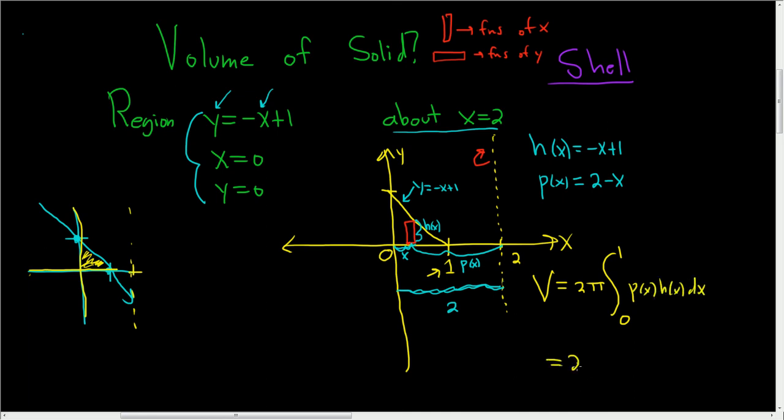So this is 2 pi 0 to 1. And then p of x was 2 minus x. And then h of x was negative x plus 1 dx. And via some magical steps called a calculator, this is approximately 5.2. So I hope that made sense. Thank you.